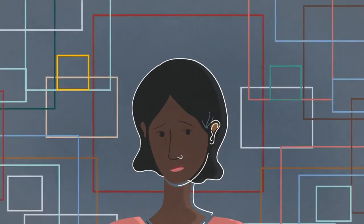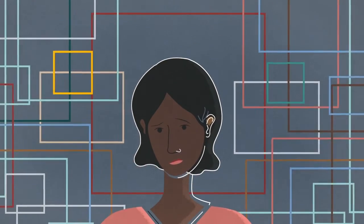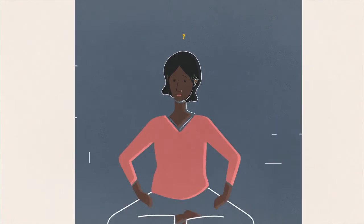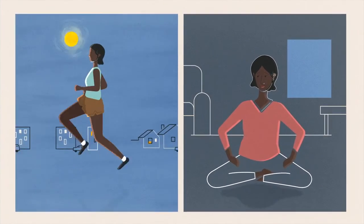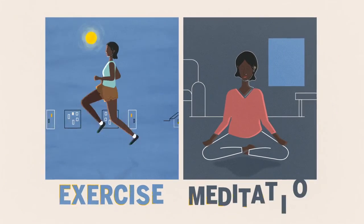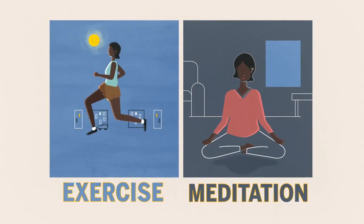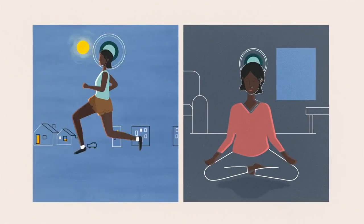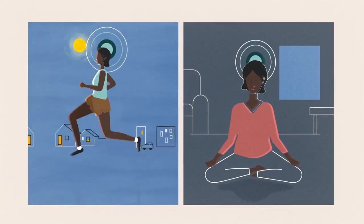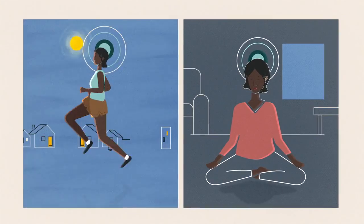It's not all bad news, though. There are many ways to reverse what cortisol does to your stressed brain. The most powerful weapons are exercise and meditation, which involves breathing deeply and being aware and focused on your surroundings. Both of these activities decrease your stress and increase the size of the hippocampus, thereby improving your memory.